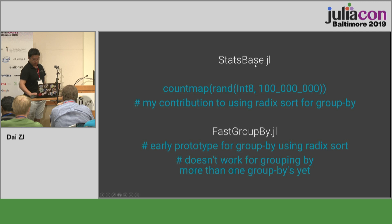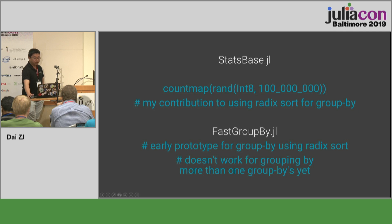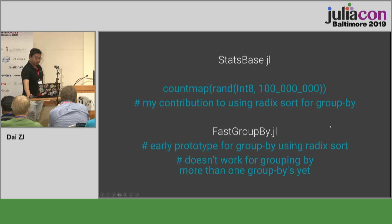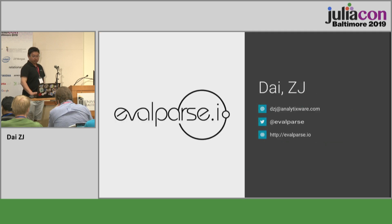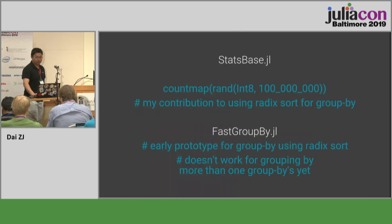To finish off: if you want to do group by, `countmap` in StatsBase is really quick for types that are less than two bytes. I've also done an early prototype of group by using radix sort in `fastgroupby.jl` — it's very experimental, probably not ready for serious use yet. But the benchmarks show you can group by arrays more quickly using the radix sort implementations.